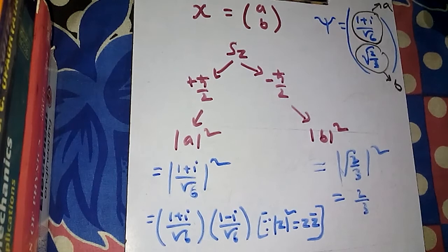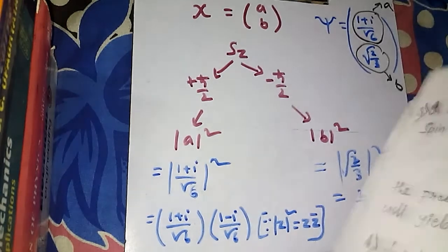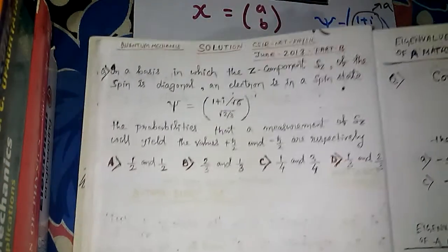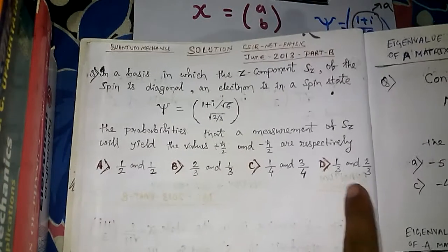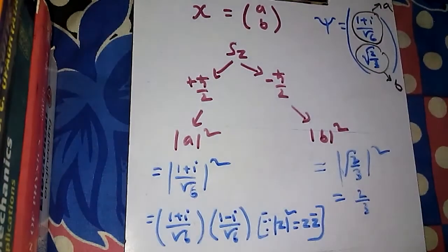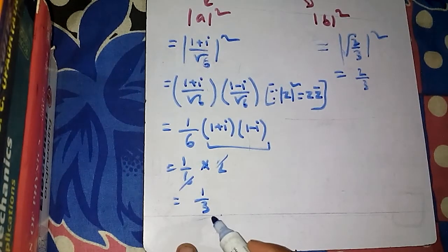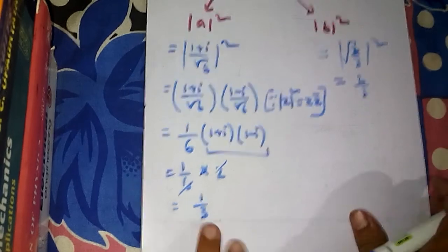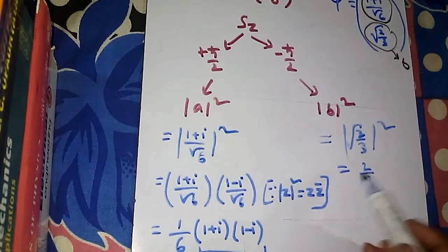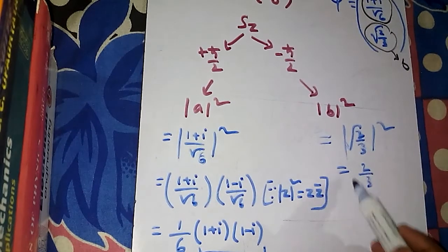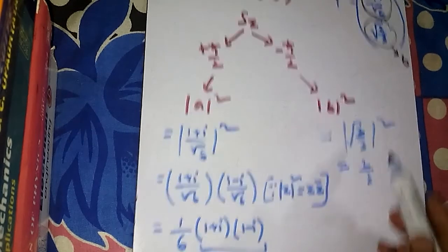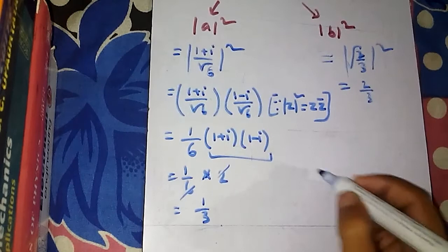So the answer is option D: 1/3 and 2/3. The probability of finding +ℏ/2 is 1/3, and the probability of finding -ℏ/2 is 2/3.